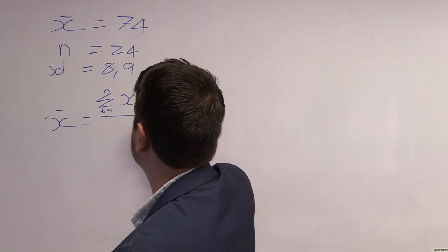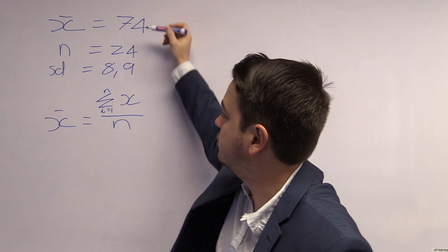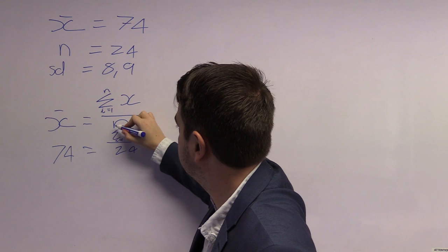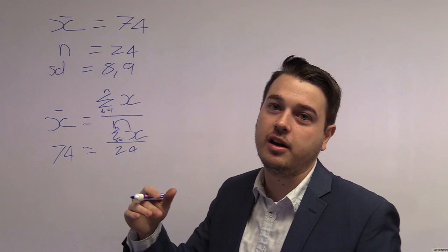We have the average of 74, n equals 24. Now we need to get the sum of x, then add the new mark and divide by 25 because we now have one extra student.